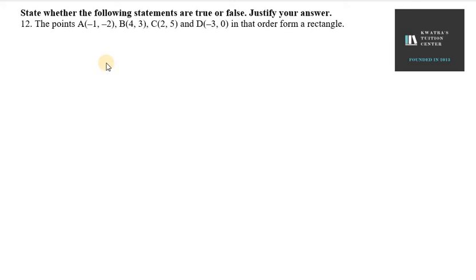Hello everyone, let's start with question number 12. So it says the points A(-1,-2), B(4,3), C(2,5) and D(-3,0) in that order form a rectangle.